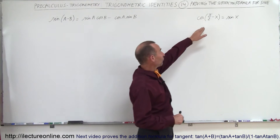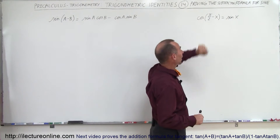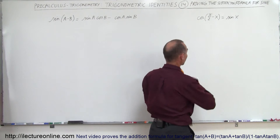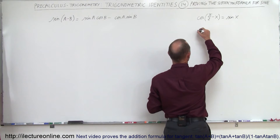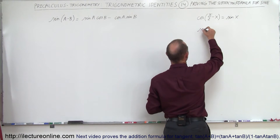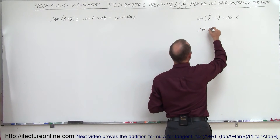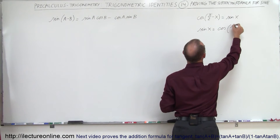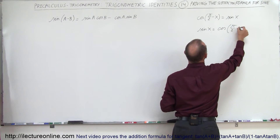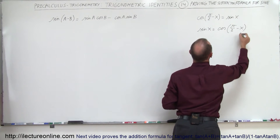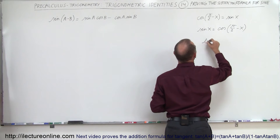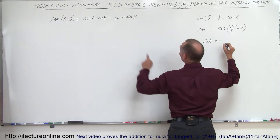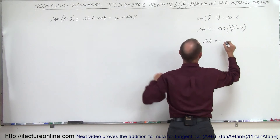We're going to start with the co-function identity right here. We realize that we can write this as the sine of x being equal to the cosine of pi over 2 minus x. Now we're going to let x equal a minus b.